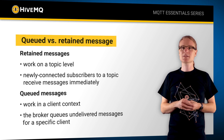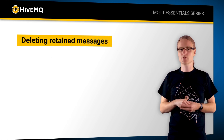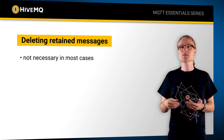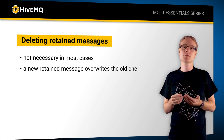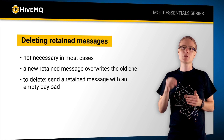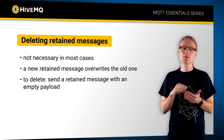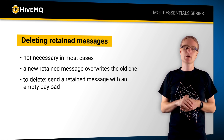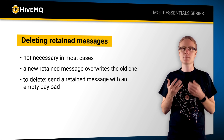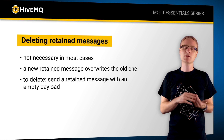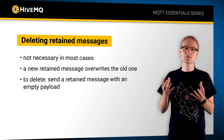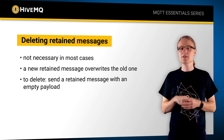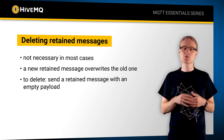Another common question is how to delete a retained message persisted on a broker for a topic. Normally you don't need to do this — if you have a topic which gets frequent updates, a new retained message will override the old one. But if you really need to delete it, you can send a retained message with an empty payload to that specific topic and the retained message will be deleted. This is a great way to implement something which circumvents the start value problem, ensuring a subscriber always gets the latest, freshest data even if there is no active producer on the topic.